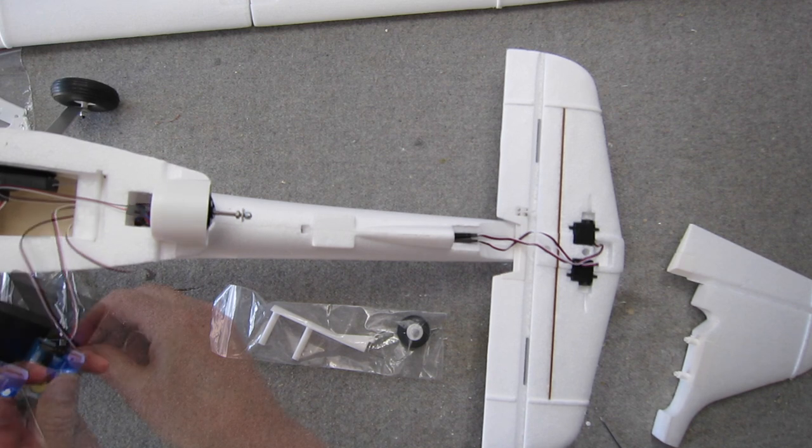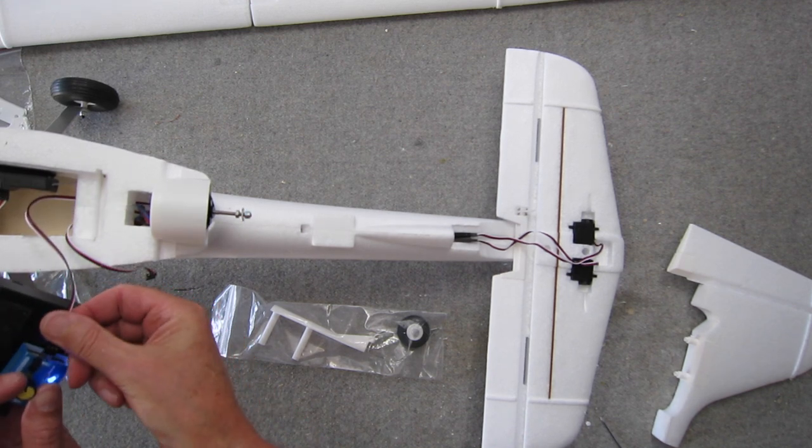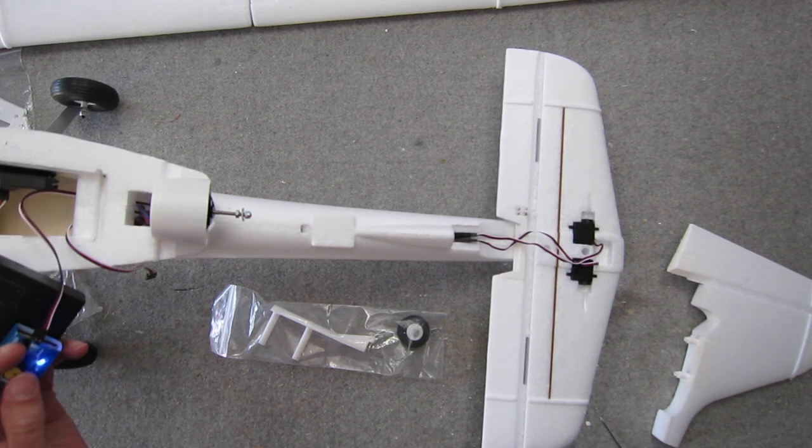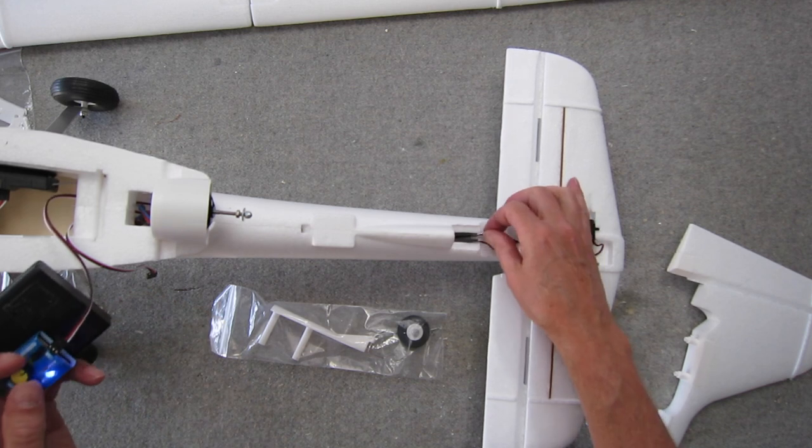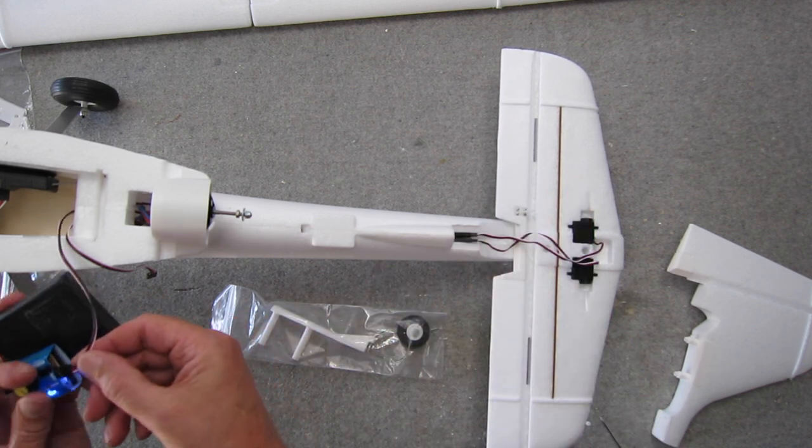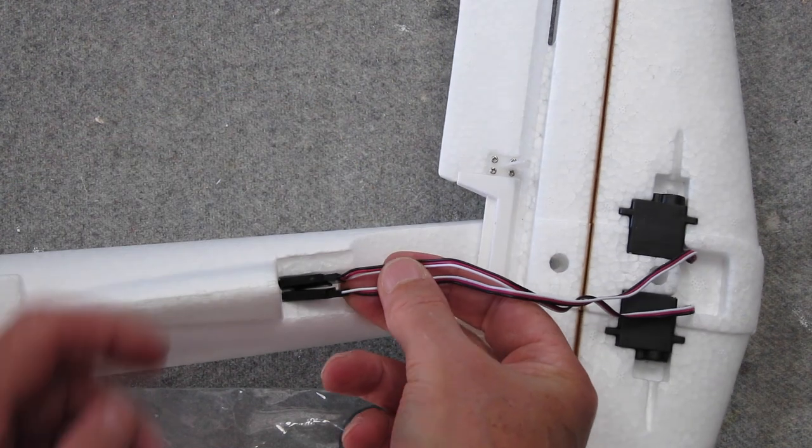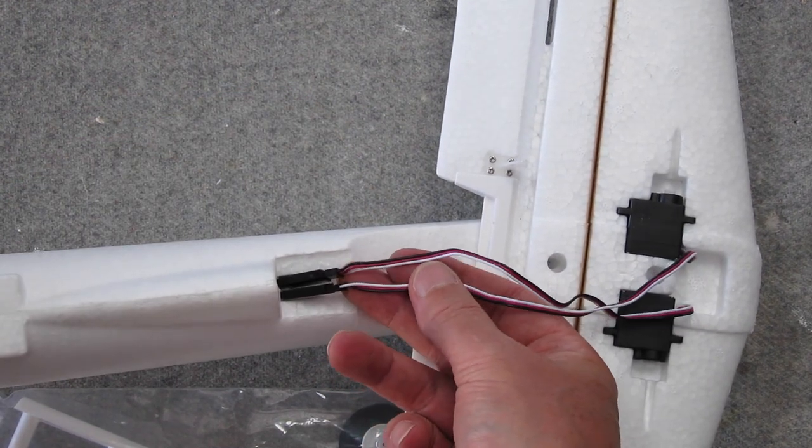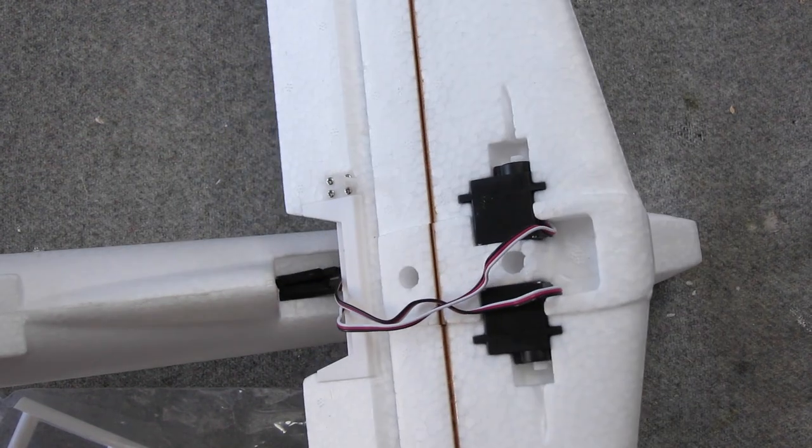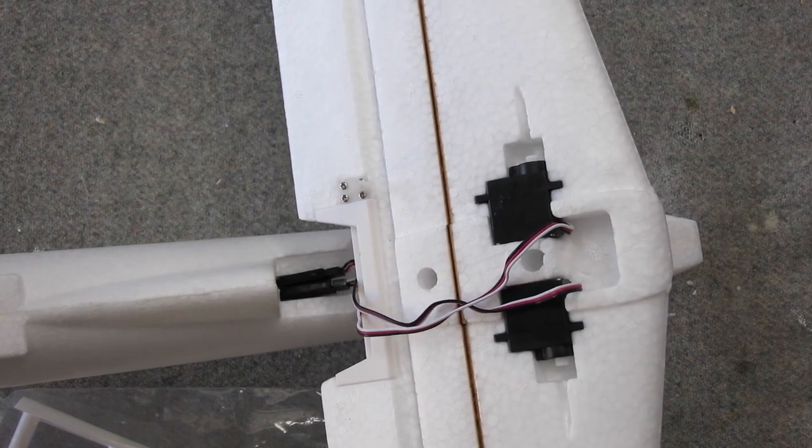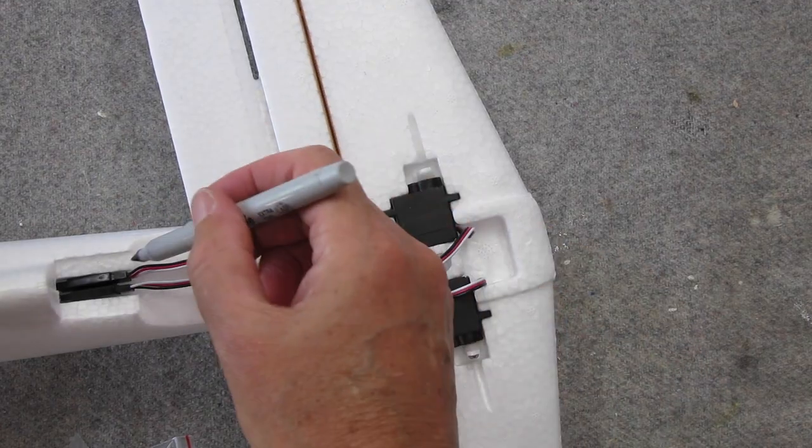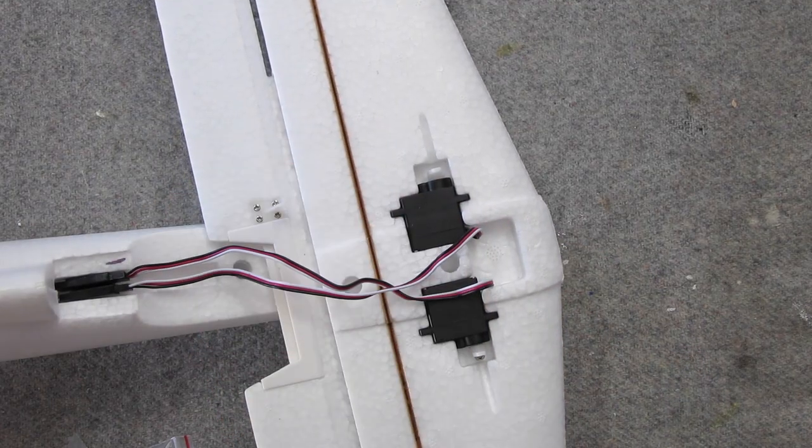I found that the lower connection was the correct way around with the white wire facing up, but the upper connection needed to be swapped over with the black wire facing up. Here's a closer view of the correct way to connect them for my plane. Your plane may be different, so both servos are working now. I'm going to mark which connection has the black wire facing up.